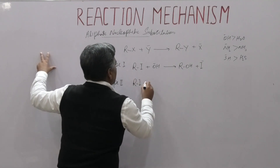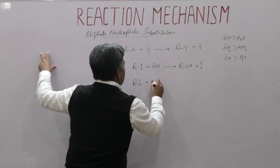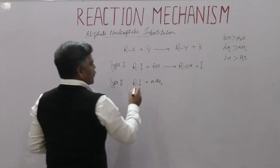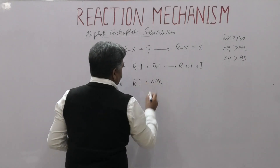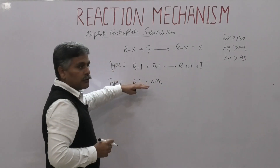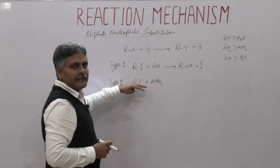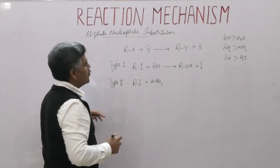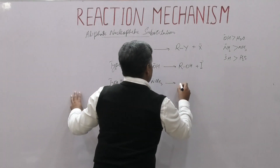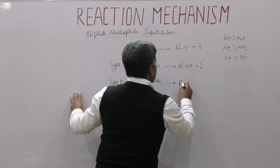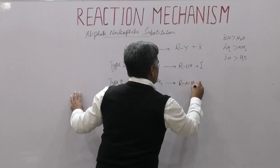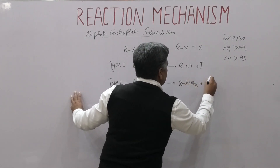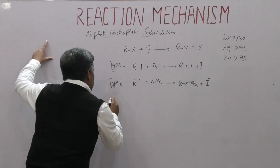Type 2: R–I plus trimethylamine (NMe₃). Trimethylamine is neutral, so in Type 2 both reactants are neutral — neither is positively nor negatively charged. The product is R–NMe₃⁺ plus I⁻.